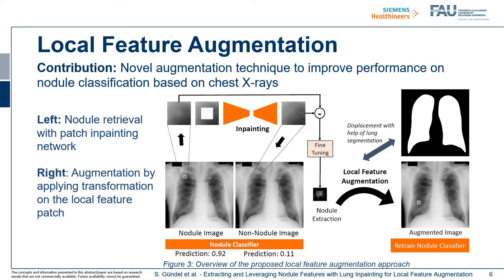The nodule patches are overlaid with masks and fed into the in-painting network. The prediction should lead to realistic-looking background tissue without the nodule. After that, the output is subtracted with the original nodule images. Including a fine-tuning process leads to the nodule features, visible in the middle. A collection of several nodule features leads to the local feature augmentation — for example, we can displace the nodules and do further modifications on the local patch to augment the image. Afterwards, the nodule classifier can be retrained.